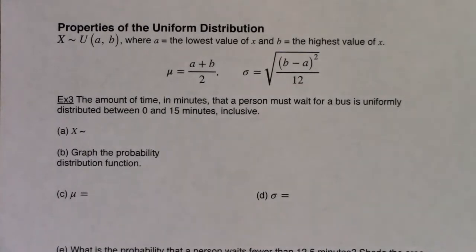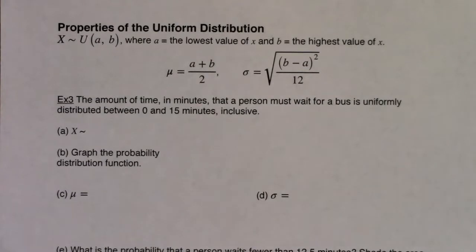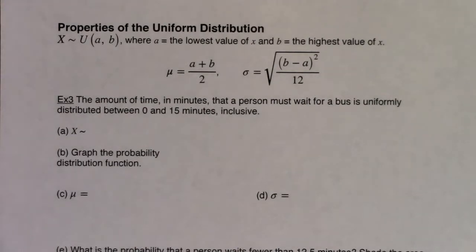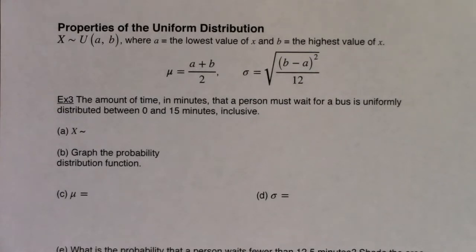We'll get a graph, a mean, a standard deviation, and we'll answer some probability questions. Then we're going to get our first look at what I refer to as the backwards problem. So as I read example three, be on the listen for the variable. The amount of time in minutes that a person must wait for a bus is uniformly distributed between zero and 15 minutes, inclusive.